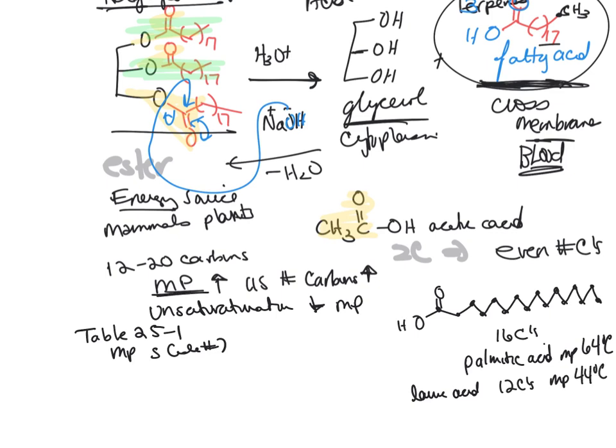Now if you notice, lauric acid has 12 carbons and that melting point is 44 degrees. So if we increase the number of carbons from 12 carbons to 16 carbons, we increase the melting point. But that's for saturated, that means there's no carbon-carbon double bond for saturated fatty acids. These are usually in animal fats. They're saturated, they're usually like lard, and they're usually solids at room temperature.